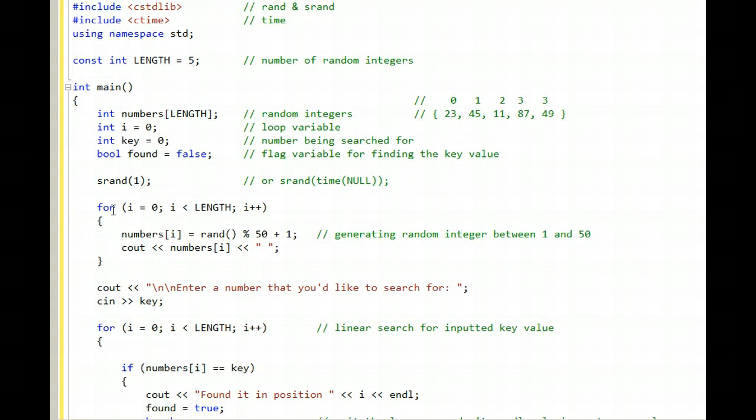As this program winds up, this first for loop stores random numbers in the array.